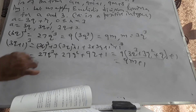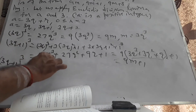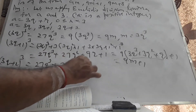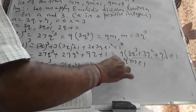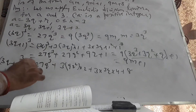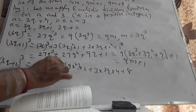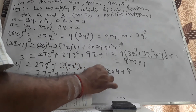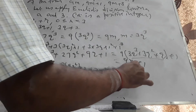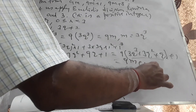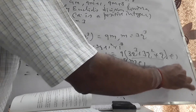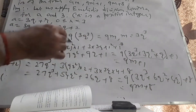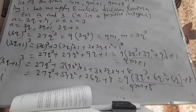(3Q+2)³ equals 27Q³ + 3×(9Q²)×2 + 3×(3Q)×4 + 8, which equals 27Q³+54Q²+36Q+8, which is 9(3Q³+6Q²+4Q)+8, which is of the form 9m+8, where m is that bracketed quantity.